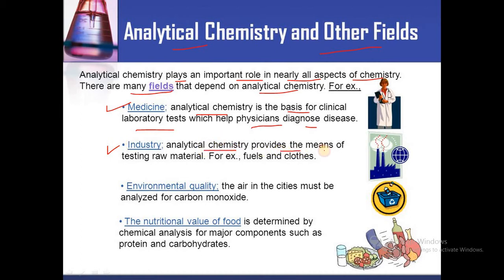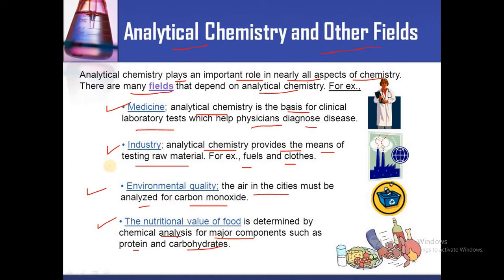At the industry level, analytical chemistry provides the means of testing raw materials — for example, which type of fuels and materials are included in clothes. In environmental quality, the air in cities must be analyzed for carbon monoxide percentage. Also, the nutritional value of food is determined by chemical analysis for major components such as proteins and carbohydrates. Analytical chemistry plays an important role in all these fields.